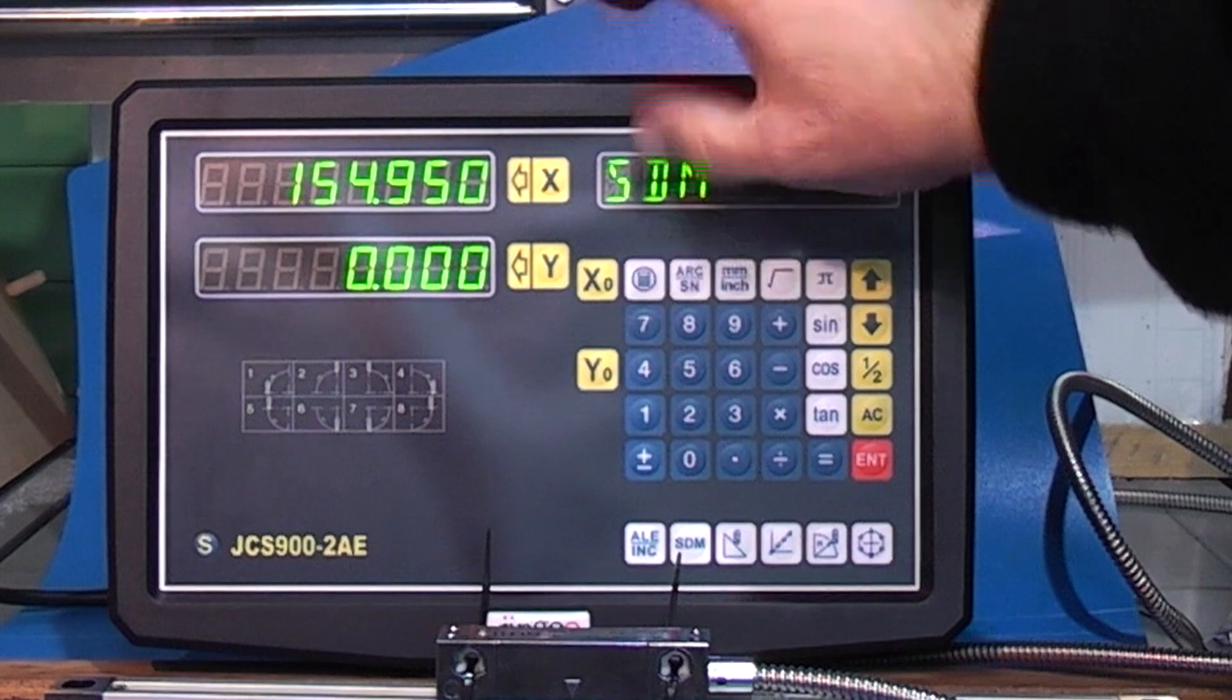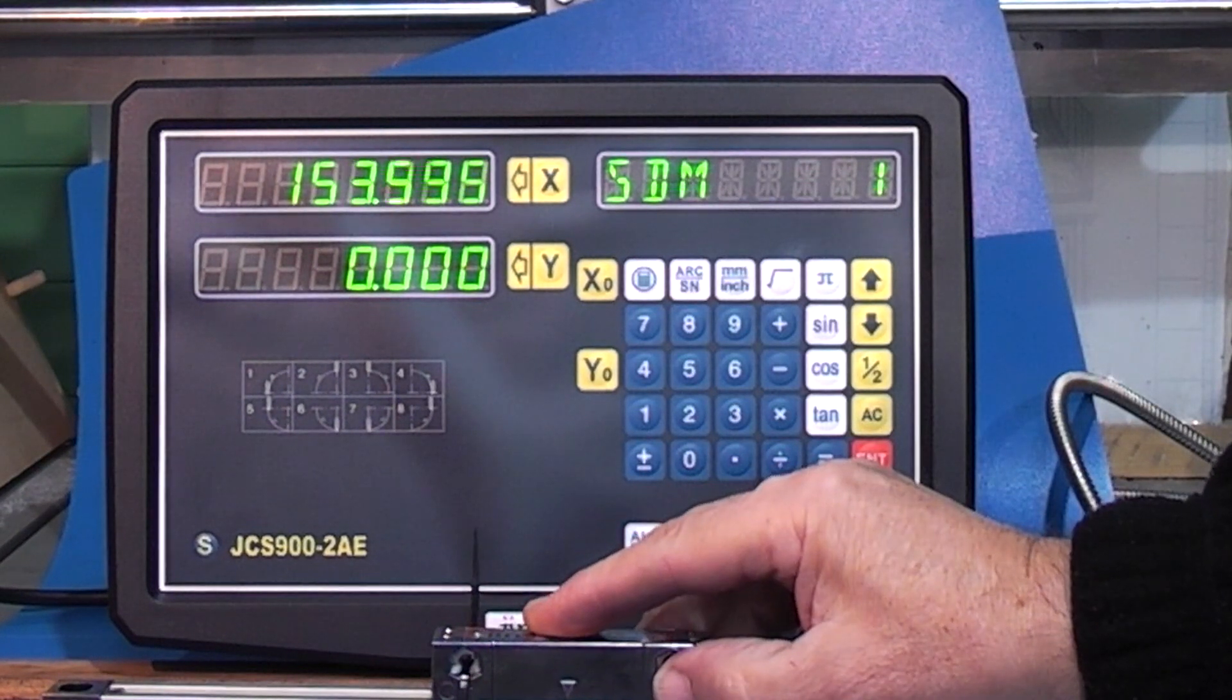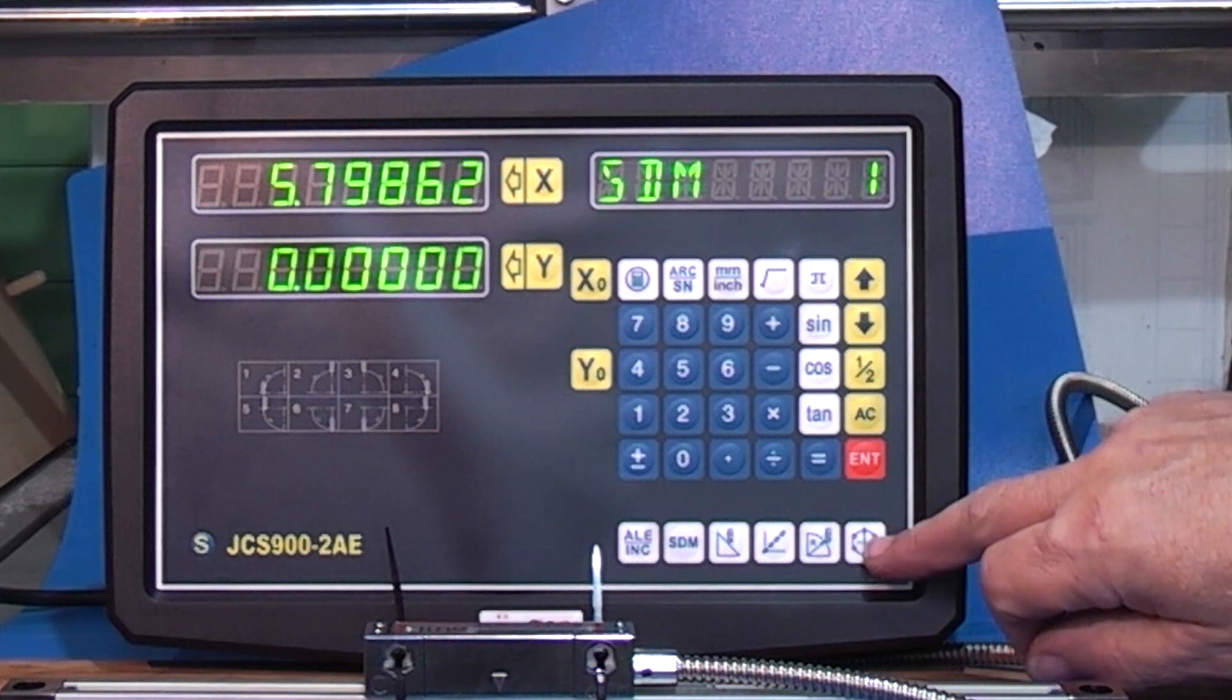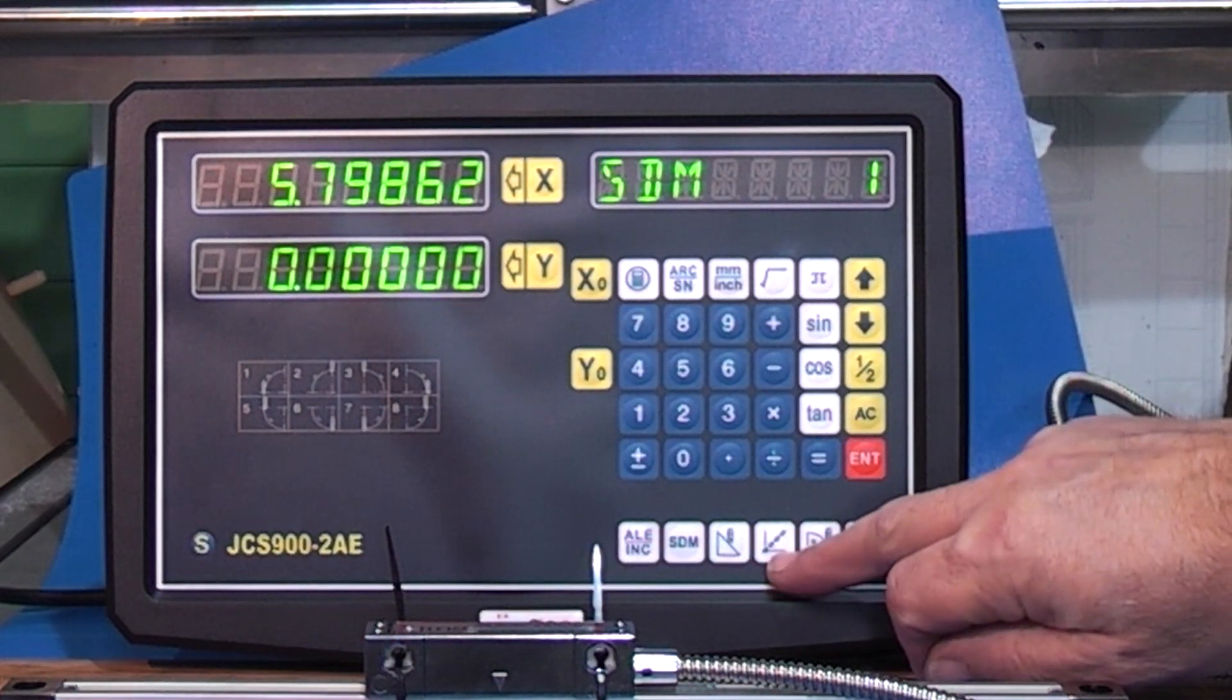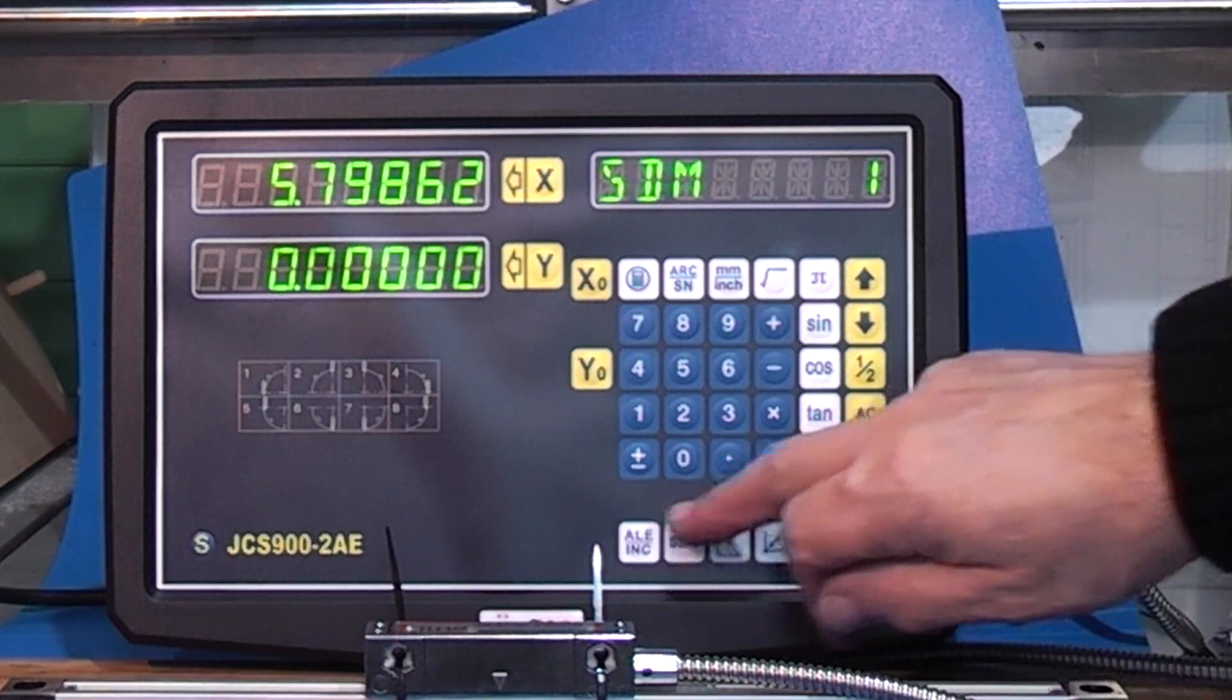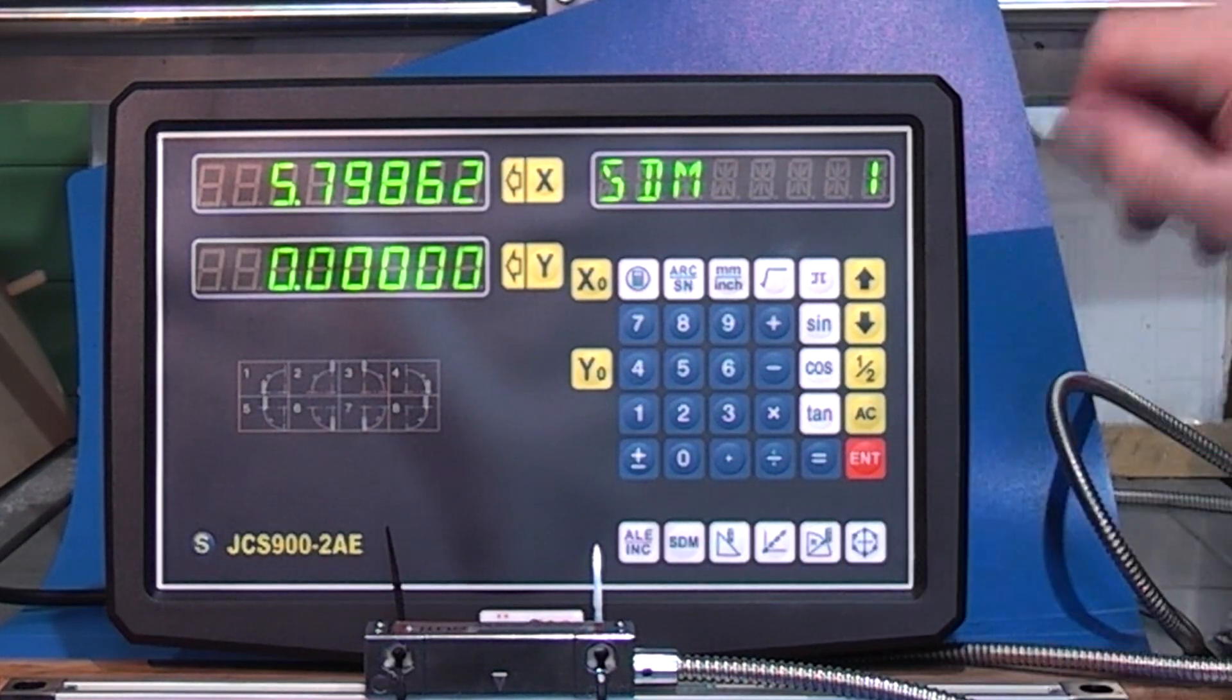If you go into metric you've got three decimal points. The bottom here you've got some other features but for a lathe these are not used. They're used for milling machines for hole positions for putting pitch circles in. We'll now look at how I fit this to the lathe.